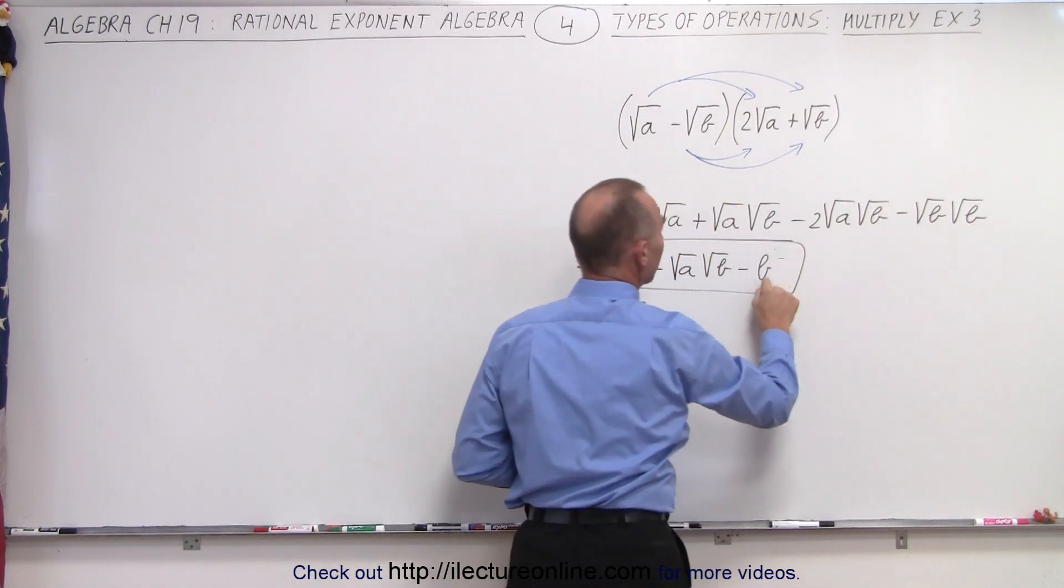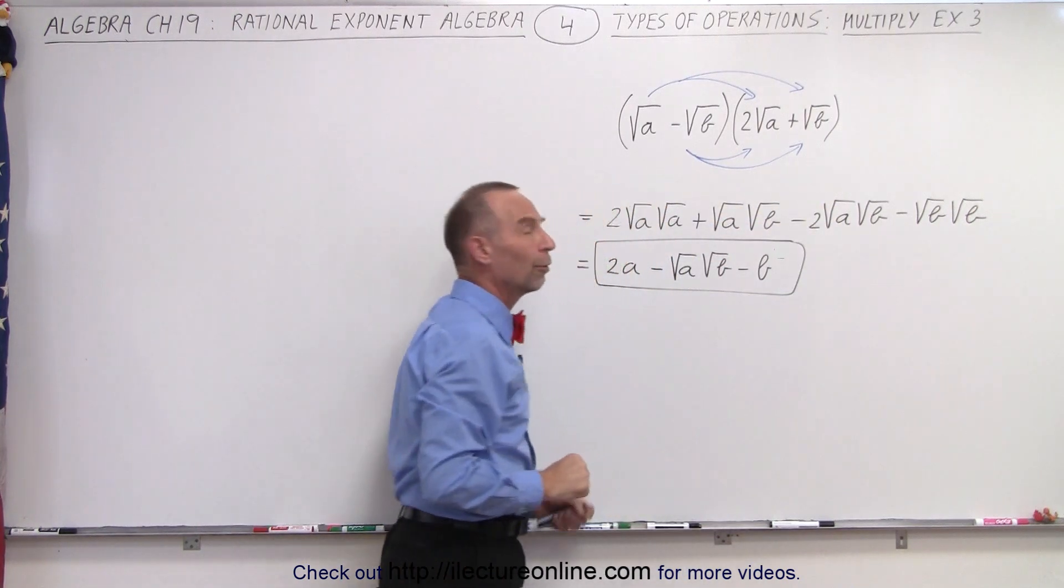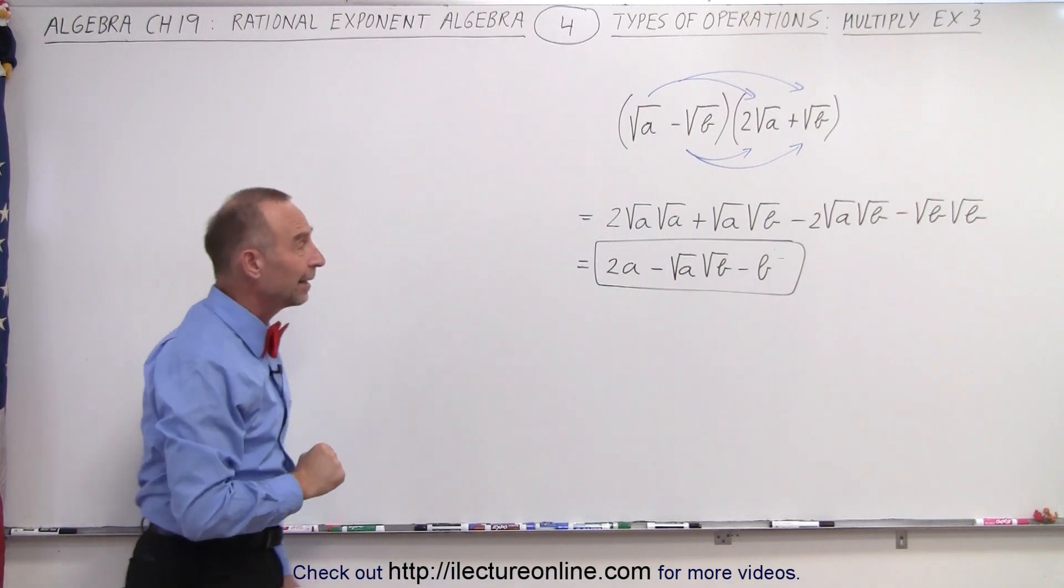This simply becomes a b. And here we see that the two terms are the same. So we simply add the numerical coefficients in front. And that is how it's done.